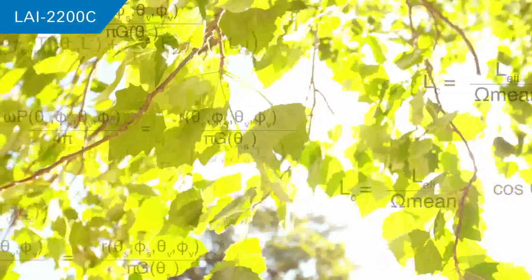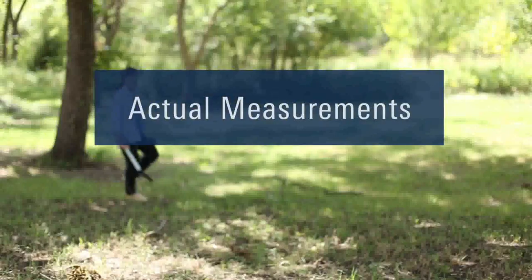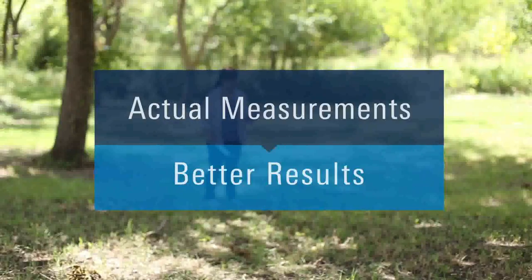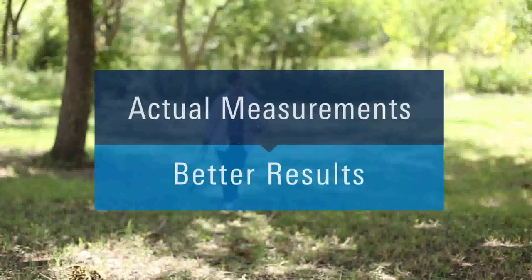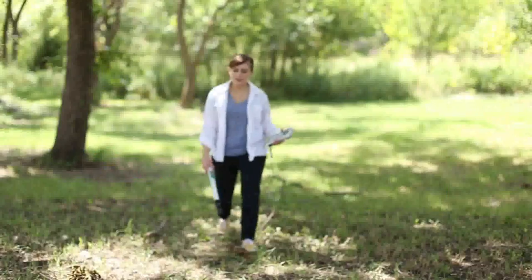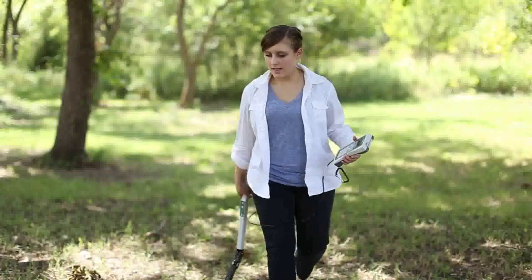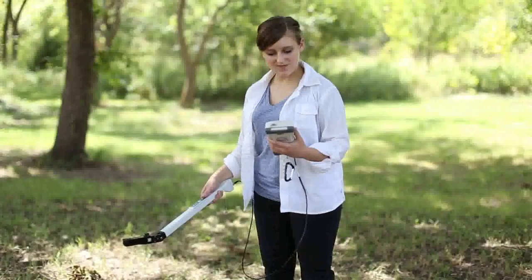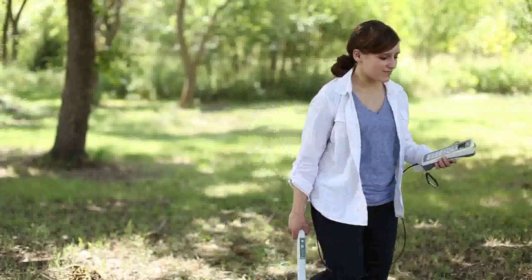This correction is based on a powerful, published light scattering model. It uses measurements of sky conditions and foliage properties made with the LAI 2200C. Reliance on actual measurements pays off with better results. Multiple studies have proven the accuracy of the LAI 2200C, with results that compare favorably to destructive sampling methods. What questions could you answer with LI-COR's Plant Canopy Analyzer? Contact us with your ideas and questions.